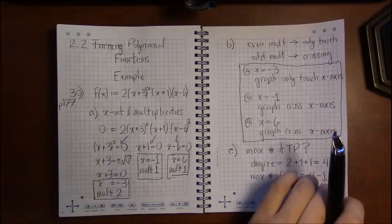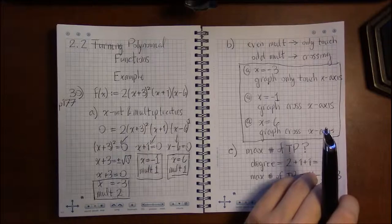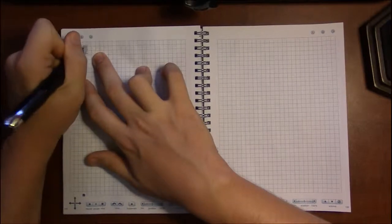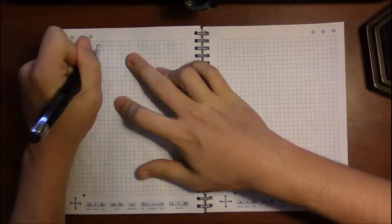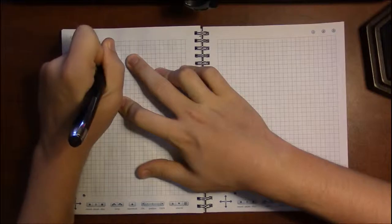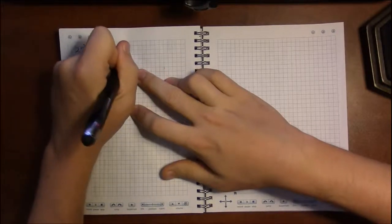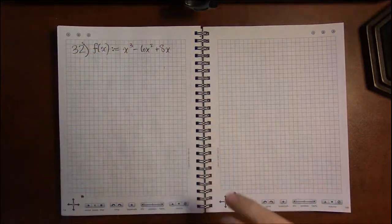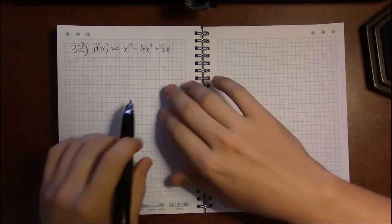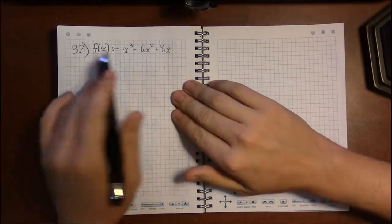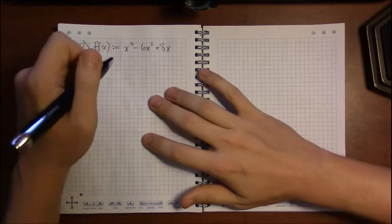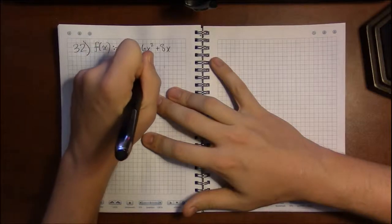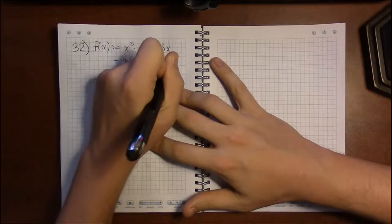So let's take a look at something like say 32 next. Now 32 isn't in the nice form of being fully factored but I'm going to go ahead and do that for you. So we have x cubed minus 6x squared plus 8x as our polynomial. Well each term has an x in it. So the first thing I'm going to do to factor this is to pull out an x out of all three terms and that'll leave me with x squared minus 6x plus 8.